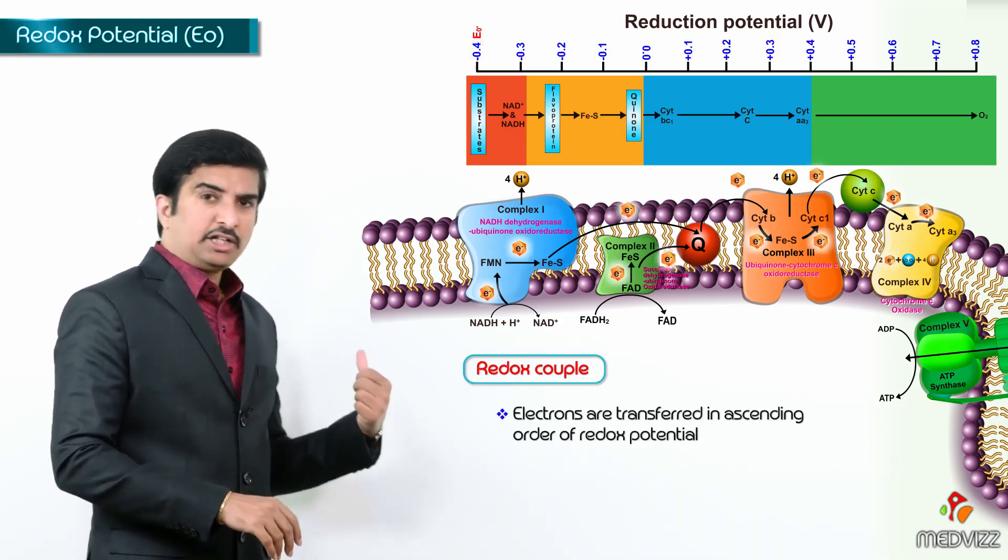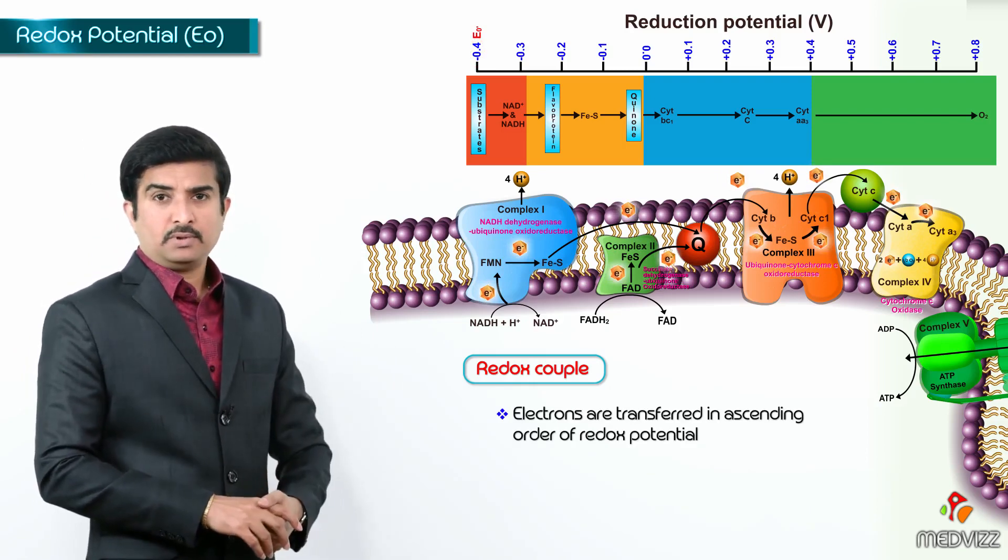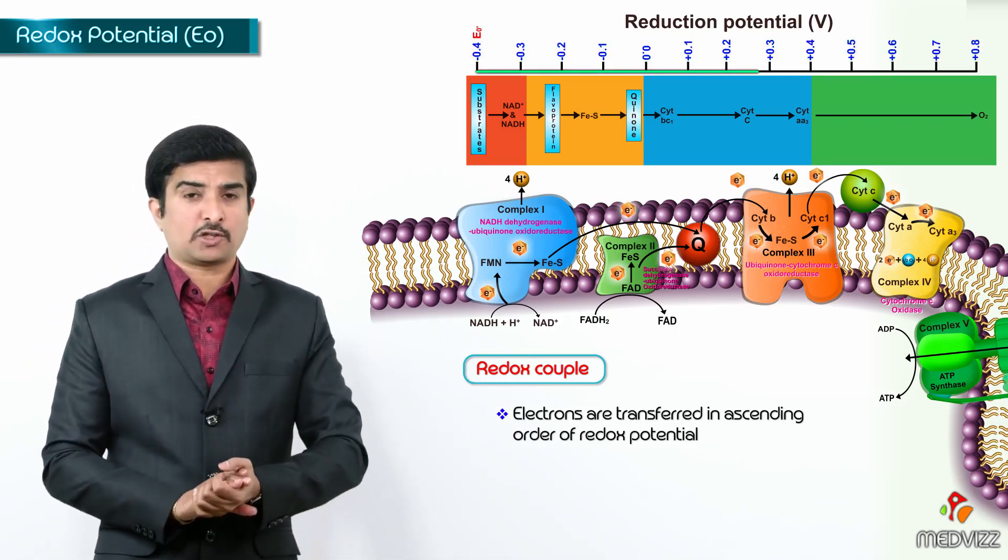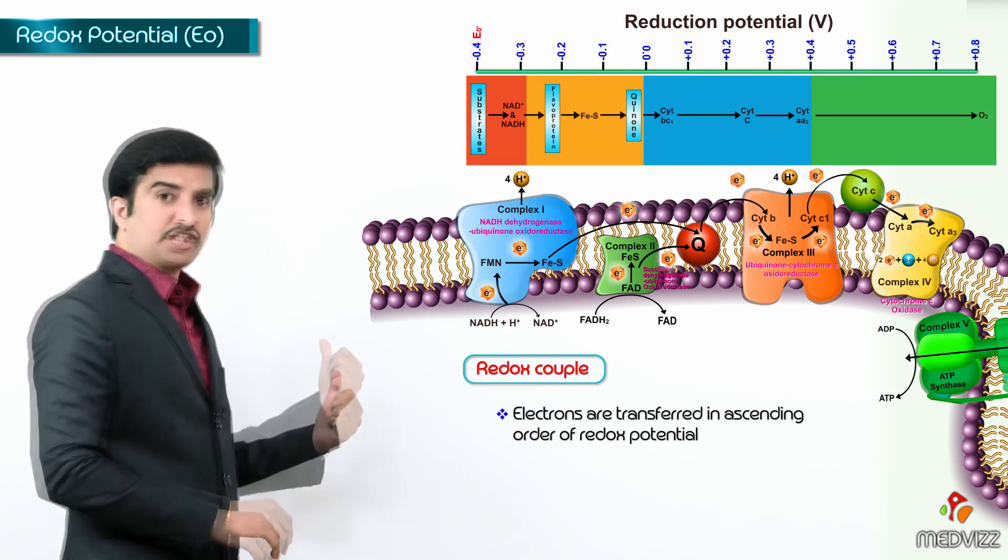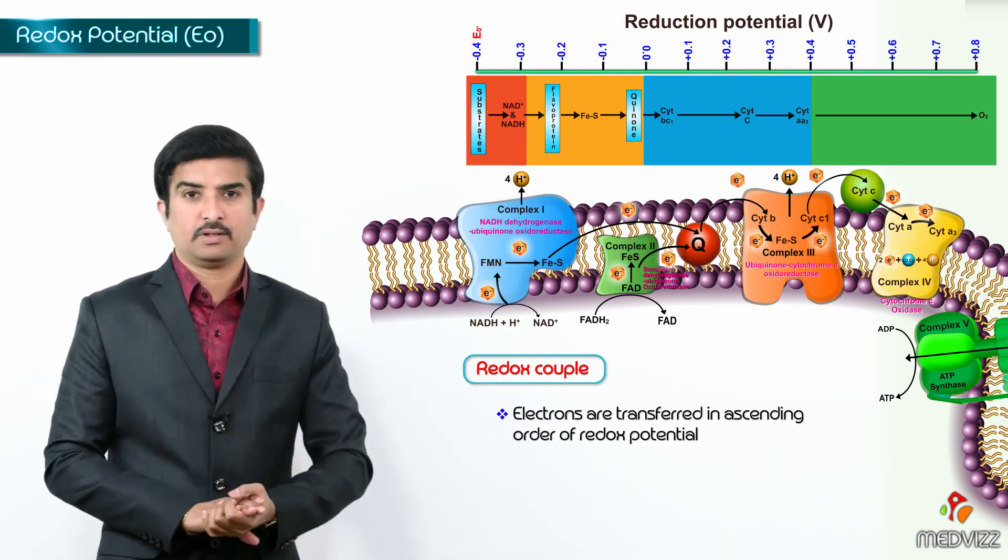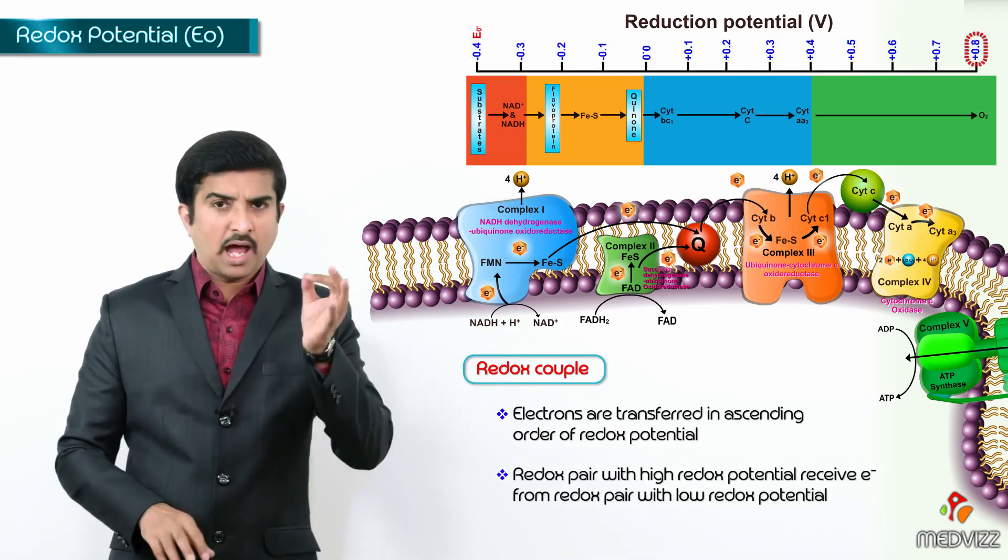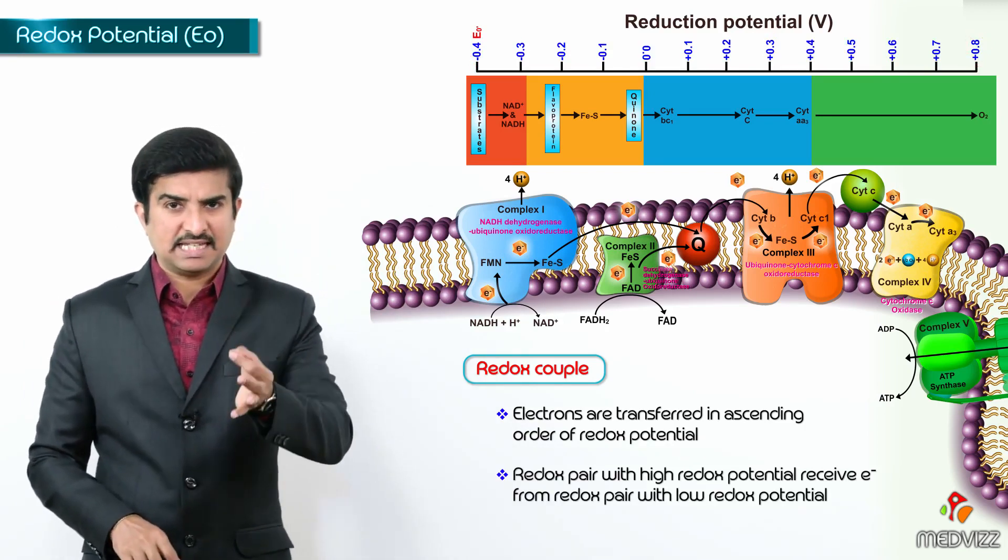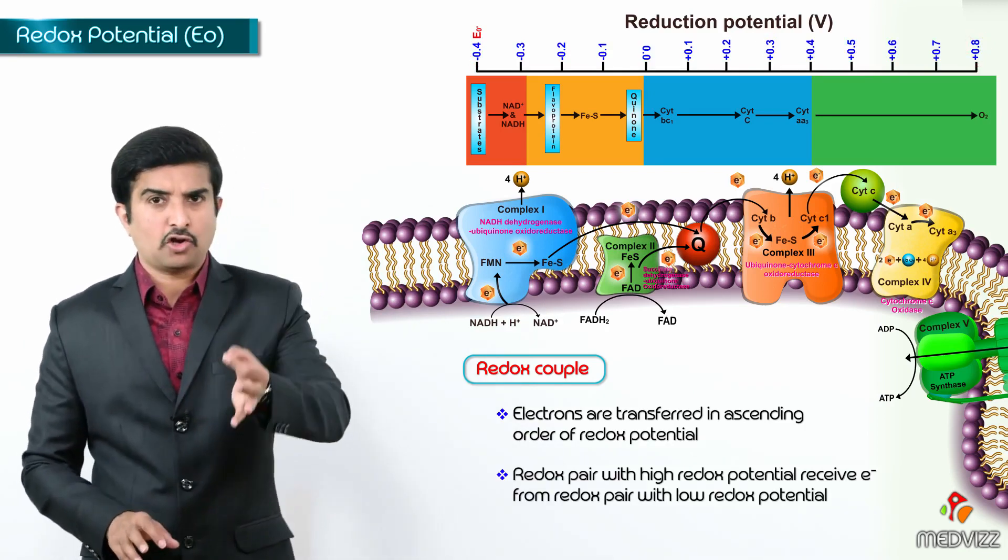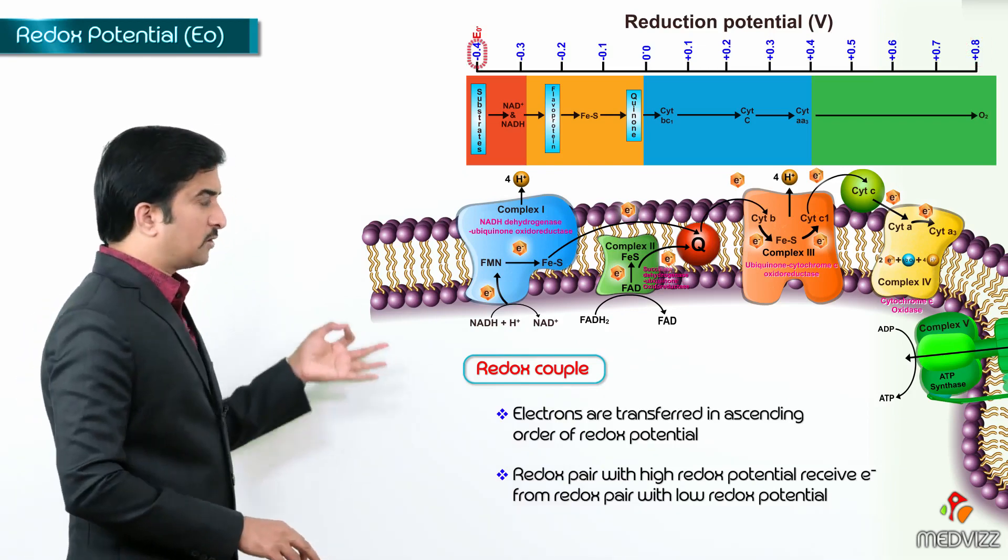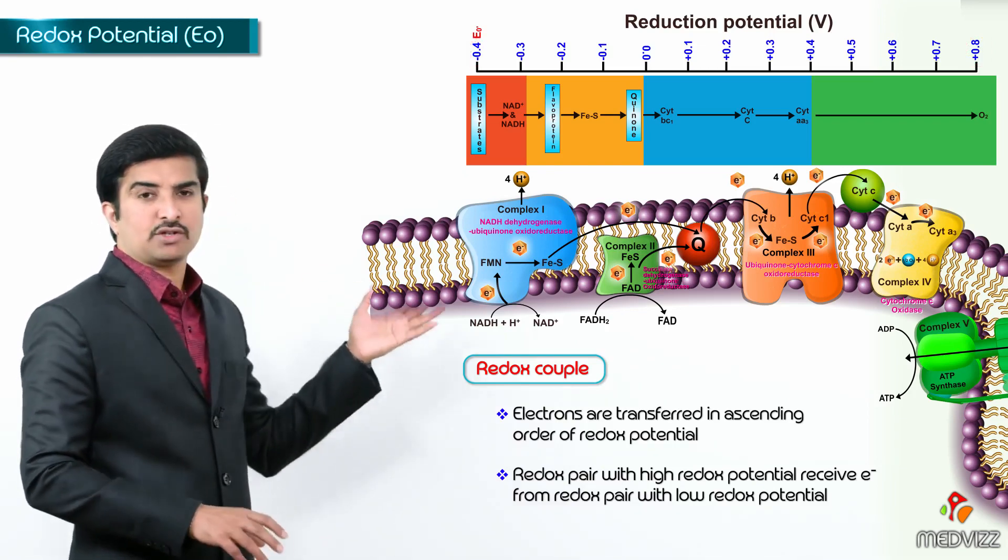And the electrons are transferred always in an ascending order of redox potential which means from negative to the positive. So, the redox pair with high redox potential receive electron from a redox pair with a low redox potential what we can see in this equation.